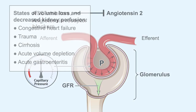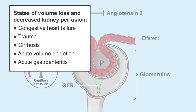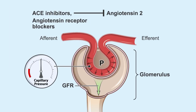However, in states of volume loss and decreased kidney perfusion such as congestive heart failure, trauma, cirrhosis, acute volume depletion, or acute gastroenteritis, the use of these drugs may decrease glomerular pressure and GFR.